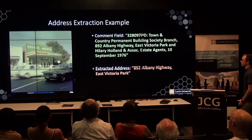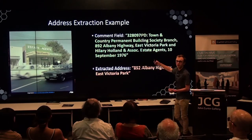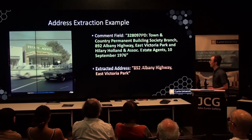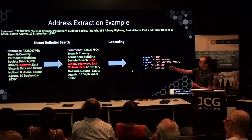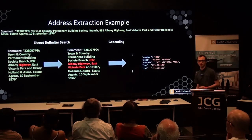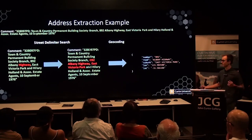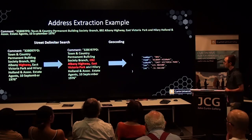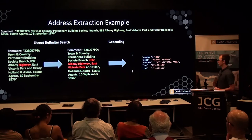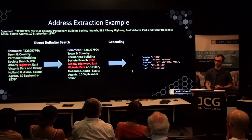Here we have an image with its comment field containing '892 Albany Highway, East Victoria Park' — a nicely formatted street address that LibClean is able to extract. It began by isolating 'highway' as a potential street delimiter, then read backwards to isolate '892 Albany Highway', before loading a list of known suburbs from Perth and searching to the right for a suburb match, finding East Victoria Park. Geocoding then extracted the correct latitude and longitude.